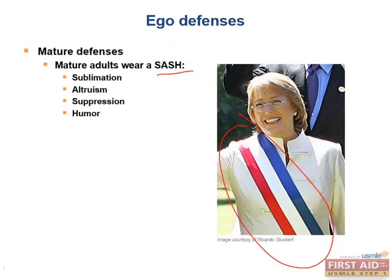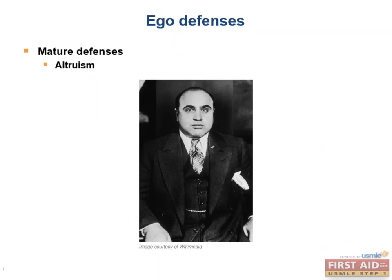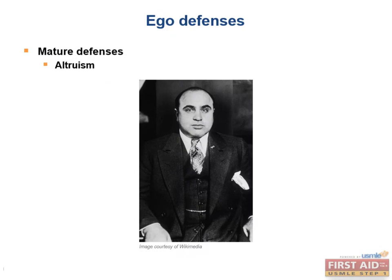The first mature defense mechanism is altruism, which refers to the use of unsolicited generosity to alleviate underlying guilty feelings. Keep in mind that some altruism is truly genuine and not the outcome of underlying guilty feelings, but sometimes it's a defense mechanism. One possible example is the mafia boss Al Capone, who made donations to various charities even though he was a mafia boss — he was actually called a modern-day Robin Hood.